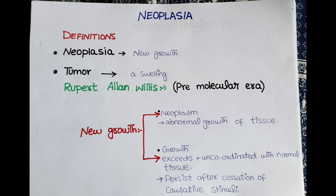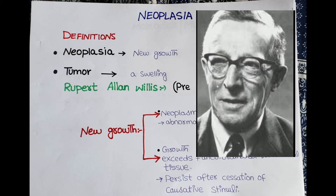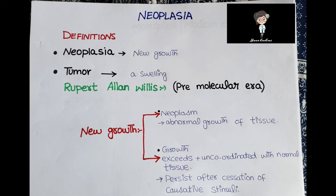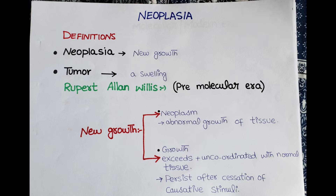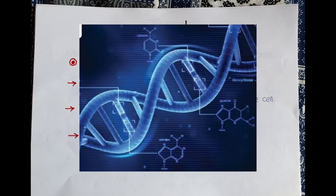Now let's come towards the definition of neoplasia. It is really very difficult to define neoplasia. The most authentic definition was given by Rupert Ewan Willis, an Australian pathologist, who described neoplasia as an abnormal mass of tissue whose growth exceeds and is uncoordinated with normal tissue, and which persists even after cessation of the causative stimuli.